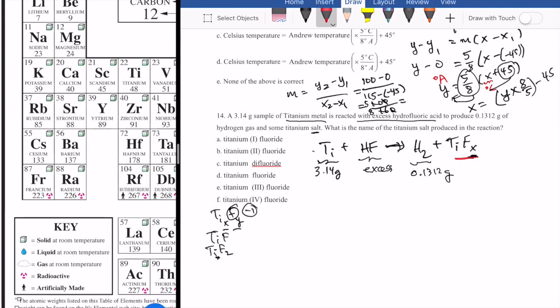If your formula is TiFx, that means your coefficient of HF has to be x, because then you have one Ti on both sides and x number of F atoms. If there's x number of F atoms, there's also x number of H atoms. Since this is already two on this side, the correct coefficient here should be x over 2. That's the balanced equation using x as our coefficient. What we need to do is figure out x from here.